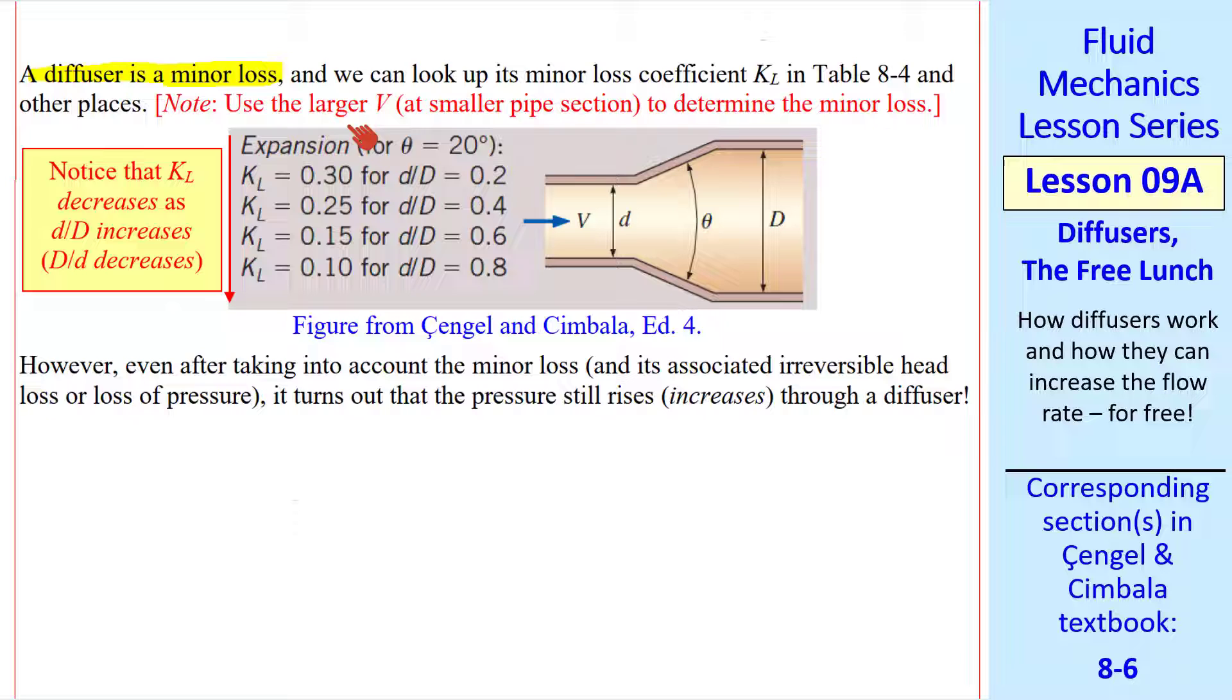Remember that by convention we use the larger speed, which is the one at the smaller pipe section, or V1, when we calculate minor loss.